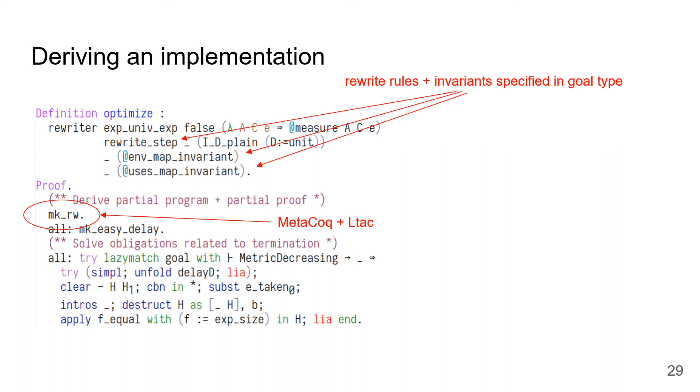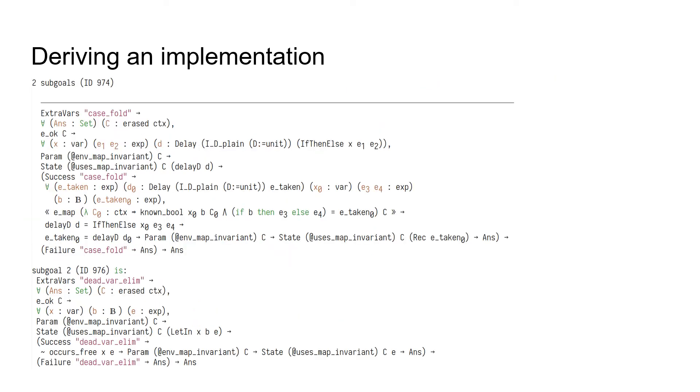In this case, there are eight proof obligations, six of which correspond to proving things about termination and to delayed computations, which we don't use. So, these obligations can be easily solved by a couple lines of Coq tactics shown here. After running these tactics, what remain are the following two proof obligations. This first proof obligation is basically the tool's way of asking the user to explain how to implement the case folding transformation using the helper data structures that they specified. This hole is given a fancy dependent type, which prevents the user from filling it with an incorrect implementation.